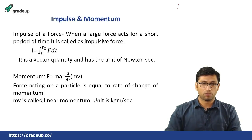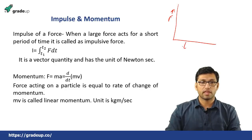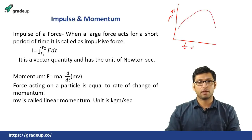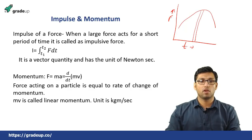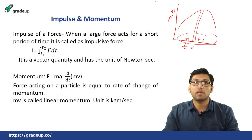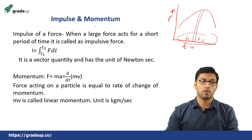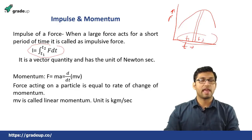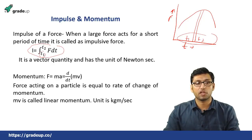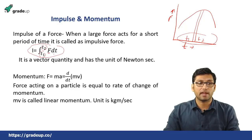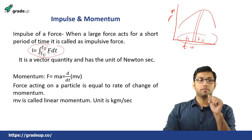Now suppose that we want to find the impulse force on a force and time diagram. The area under the force and time diagram, when this changes from T1 to T2, gives you impulse. So impulse force is equal to the integration from T1 to T2 of F dt, where T1 is the initial time, T2 is the final time, F is the force applied, and dt is the time interval.